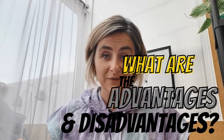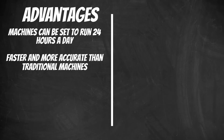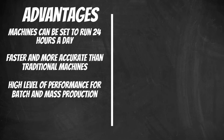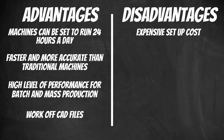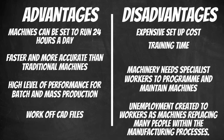What are the advantages and disadvantages of using CAD/CAM/CNC? For the advantages: machines can be set to run for 24 hours a day; they are faster and more accurate than traditional machines; they offer a high level of performance for batch and mass production; and they work off CAD files. For the disadvantages: expensive setup costs; training time is needed; machinery requires specialist workers to program and maintain; and unemployment is created as machines replace people in the manufacturing process.